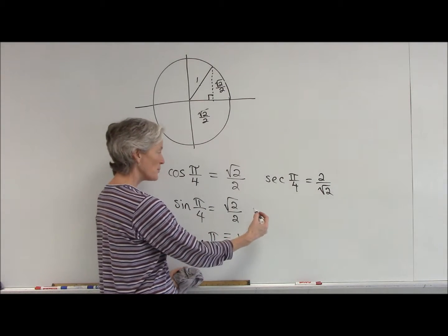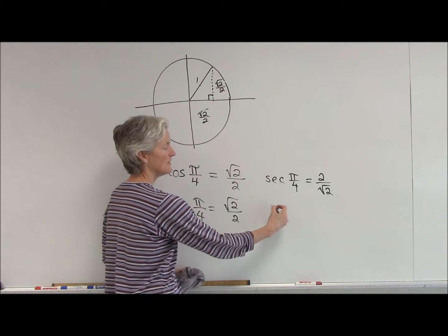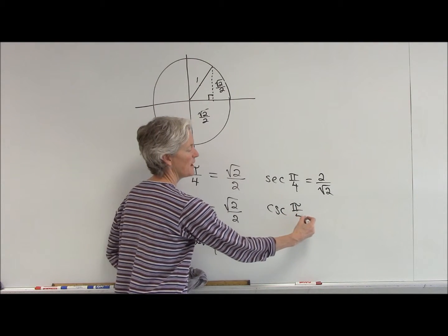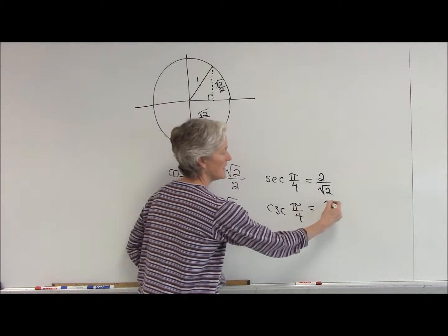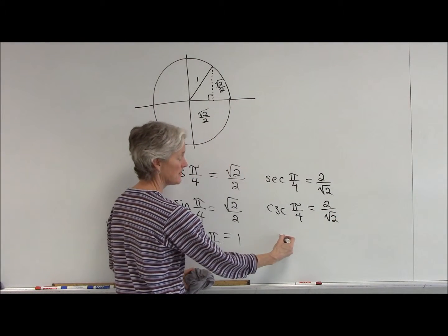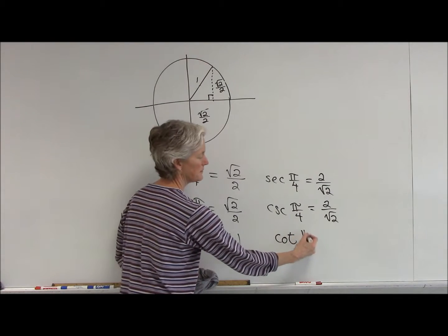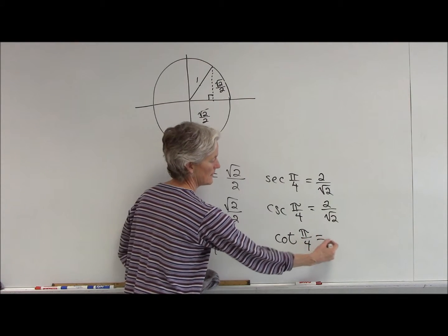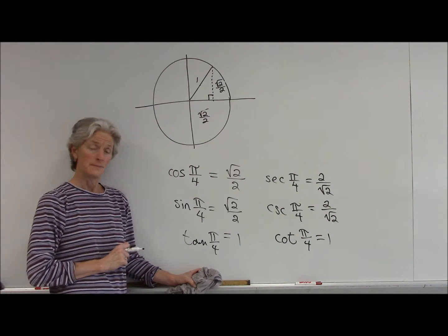The reciprocal of sine is cosecant. If I want to find the cosecant of pi over 4, that's flipped. If I want to find the reciprocal of tan, that's cotan. That's a nice easy one.